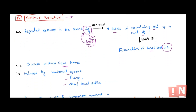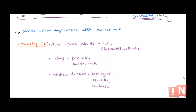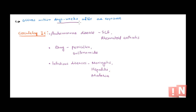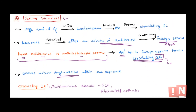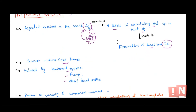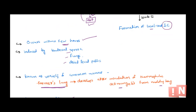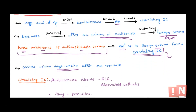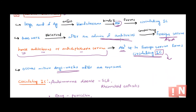Unlike the Arthus reaction, which develops within hours because antibodies are already present from repeated exposure, serum sickness or systemic type 3 hypersensitivity takes days to weeks to develop after exposure. This is because the antigen is new and the body needs time to produce antibodies against it before immune complexes can form and circulate.